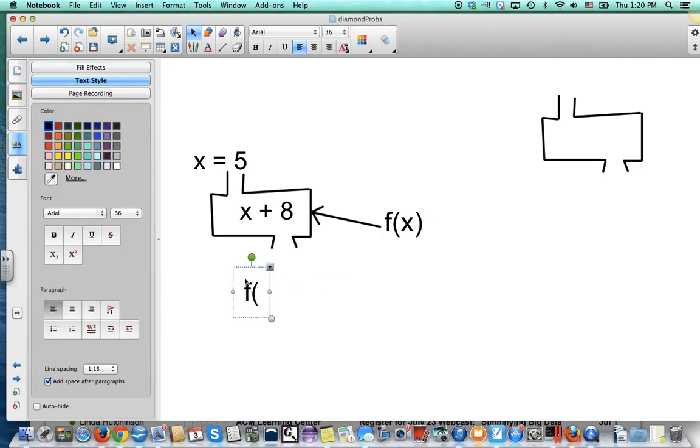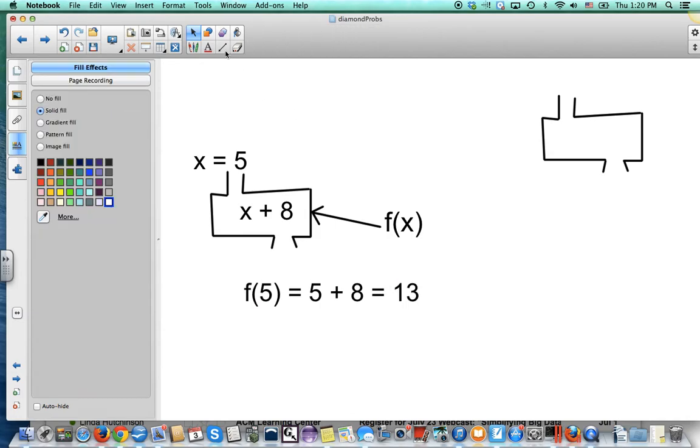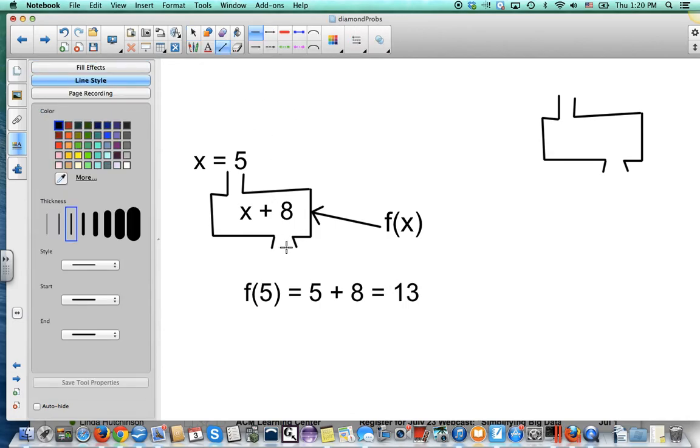If I put in a 5 for x, that means I took 5 and added 8 to it. The answer would be 13. So what comes out of the function is 13. You send a 5 in and 13 comes out.